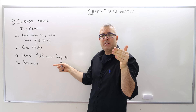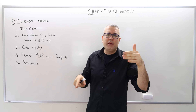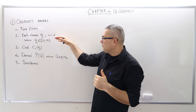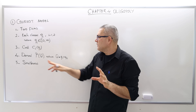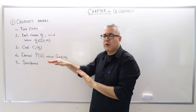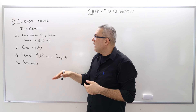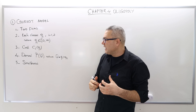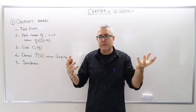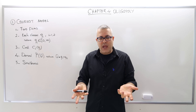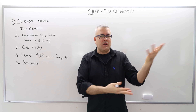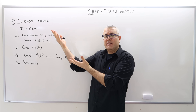The firms choose their quantities and those quantities determine the market price. At a price higher than the market-clearing price, you can't sell all your output; at a lower price, demand exceeds supply. So we assume the firms choose quantities and the price is set according to the demand curve automatically — they do not choose the price separately.